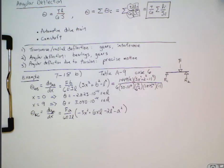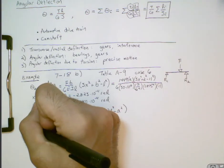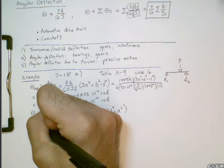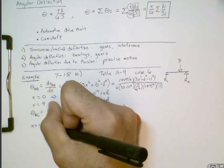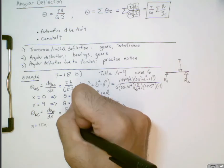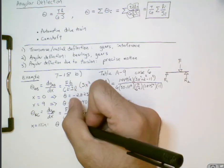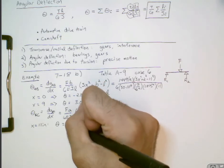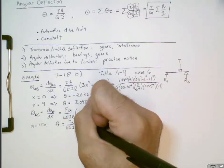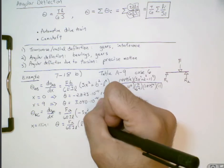Now we're interested in the case where x equals L or 11 inches. And we can evaluate that here. Theta is going to be equal to F A over 6EIL times L squared minus A squared.